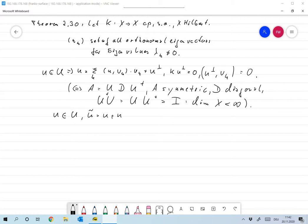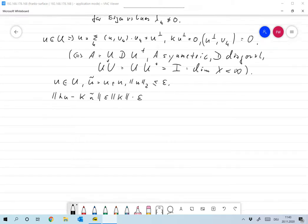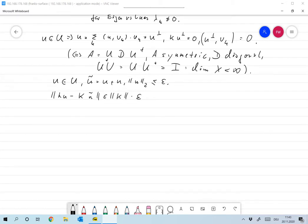And we already noted that if instead of a u in u we measure a u tilde in u, which can be written as u plus some noise n, then the error that we make when evaluating an operator on that u can be estimated as norm ku minus ku tilde. That's the error that we make when applying u tilde to u instead of u. Now this is smaller or equal to norm K times the norm of epsilon.